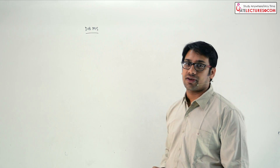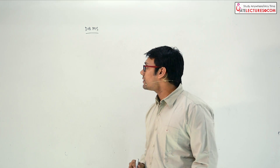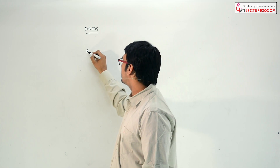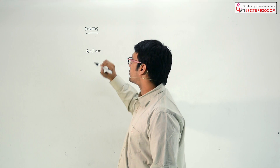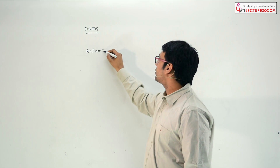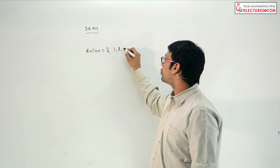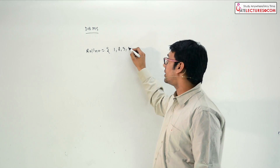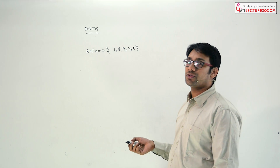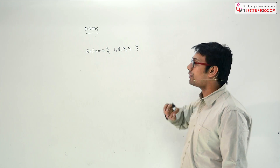What is a relation? Let me give a very simple example of a relation in the case of a database management system. Let us suppose there is a set A, or you can say there is a set of roll numbers. The set of roll numbers is going to contain the roll numbers 1, 2, 3, 4, and 5. For simplicity, let us assume it is a very small set containing only 4 elements.